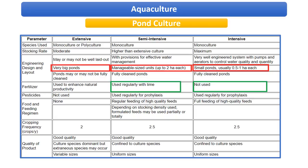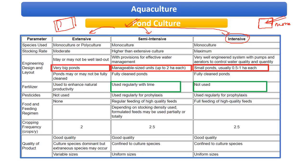Pond culture can be either extensive, semi-intensive, or intensive, depending upon the intensity of rearing. When talking about intensive cultivation, per unit of water area you are stocking more number of fishes — smaller area, more fishes. For extensive, you are taking a larger area but with fewer fishes. Semi-intensive is a midway between the two. Let us now look at the engineering design and layout.